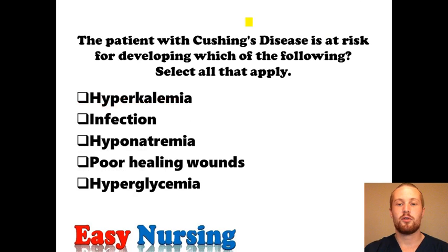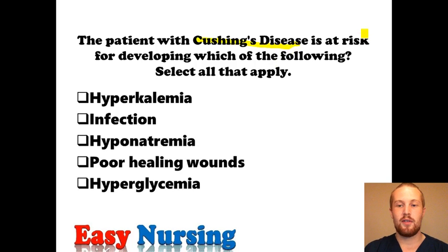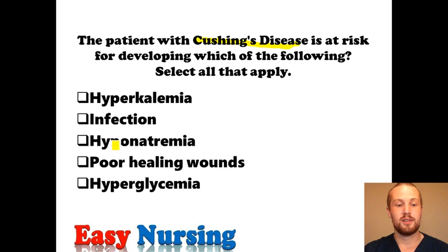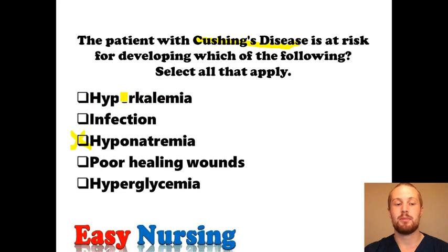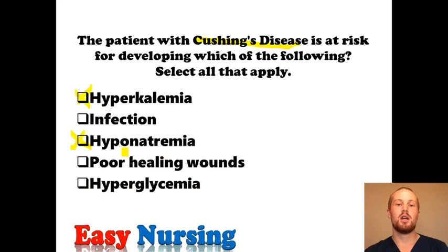The patient with Cushing's disease is at risk for developing which of the following? We're told they're at risk for a high salt level because they're holding on to aldosterone, so 'low salt' is not the answer. 'High potassium' — we told you they hold on to salt and expel potassium, so they would have a low potassium, so that is incorrect. Hyperglycemia — high blood sugars — this is expected because with Cushing's you have high cortisol, the stress hormone, which releases sugar to fuel the fight-or-flight reflex, so this will be one of our answers.